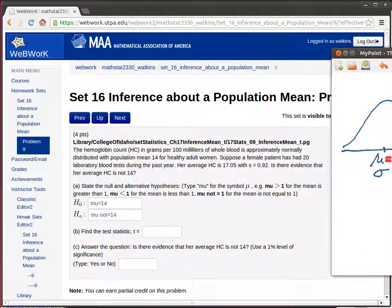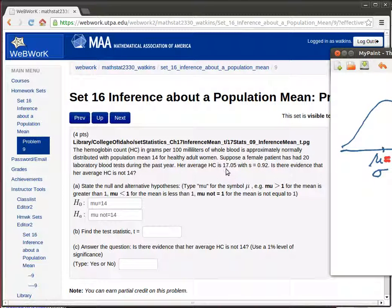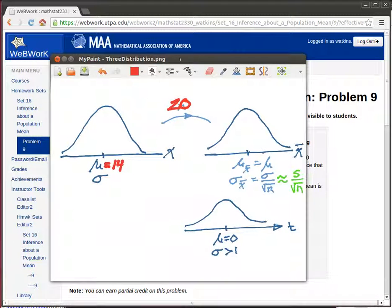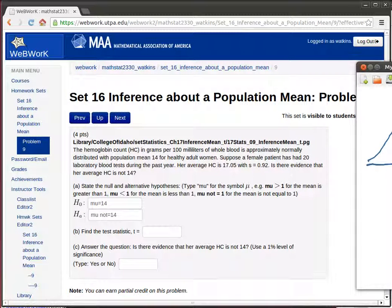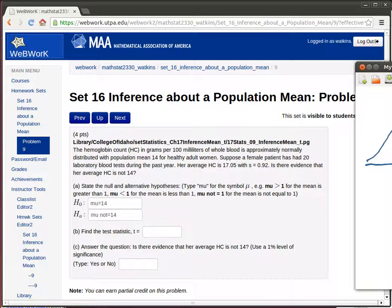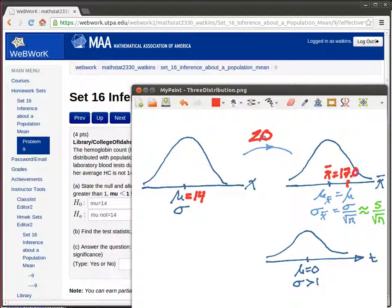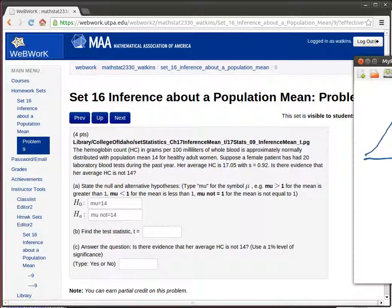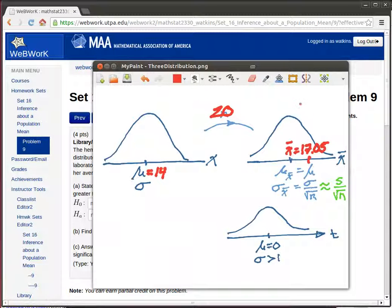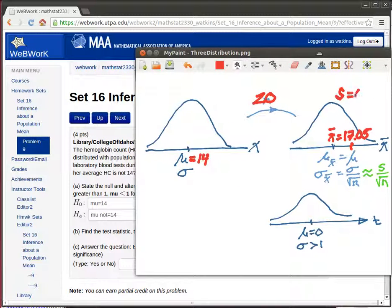We're thinking that the null hypothesis is claiming the population mean is going to be 14. Do we know the standard deviation of the population? We don't, but we do know her 20 samples. She ended up with 17 point something is what her average was, so that looks like it's above for sure the null hypothesis, 17.05. And we know a standard deviation s is equal to 0.92, the sample standard deviation is 0.92.